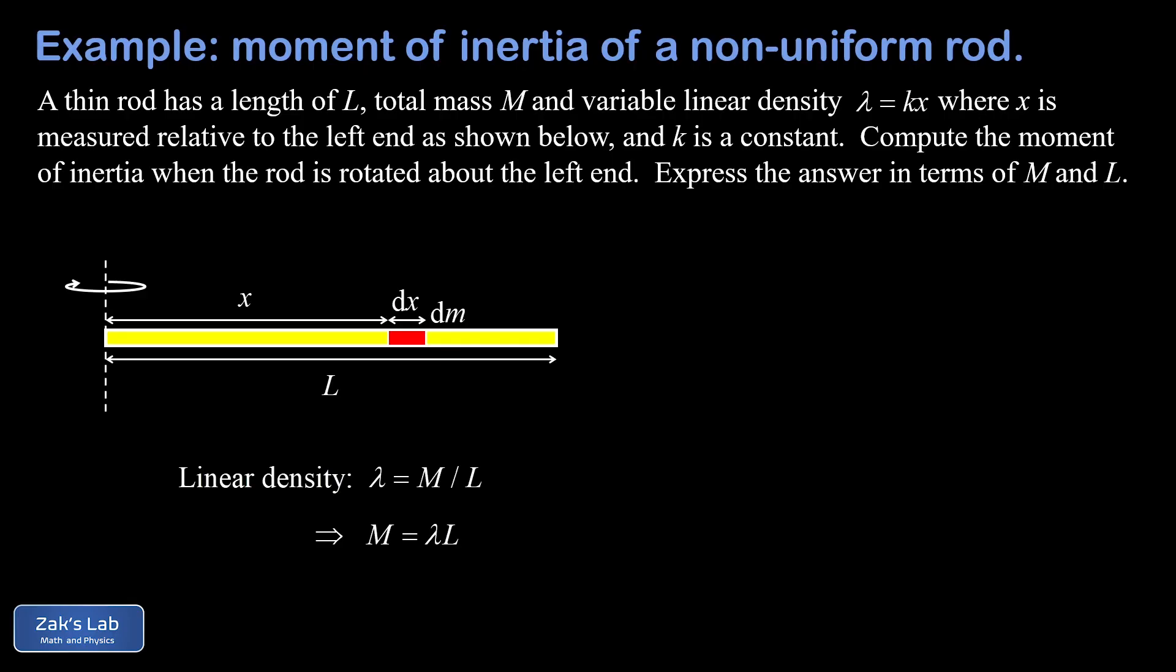And now we can start building our expression for the moment of inertia contribution of this point mass. So we start by saying dI as an infinitesimal contribution to the total moment of inertia given by this one little slice. And that's going to have the moment of inertia of a point mass.